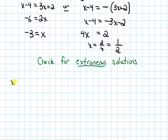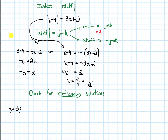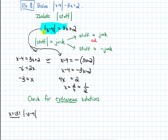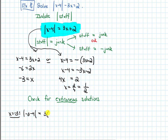Let's first plug in x equals negative 3 into our equation. I'll plug it into the step where the absolute value is isolated — that's just personal preference. So we get the absolute value of negative 3 minus 4, and I want to know if this equals 3 times negative 3 plus 2. I'll put a question mark above the equal sign since I don't know yet.